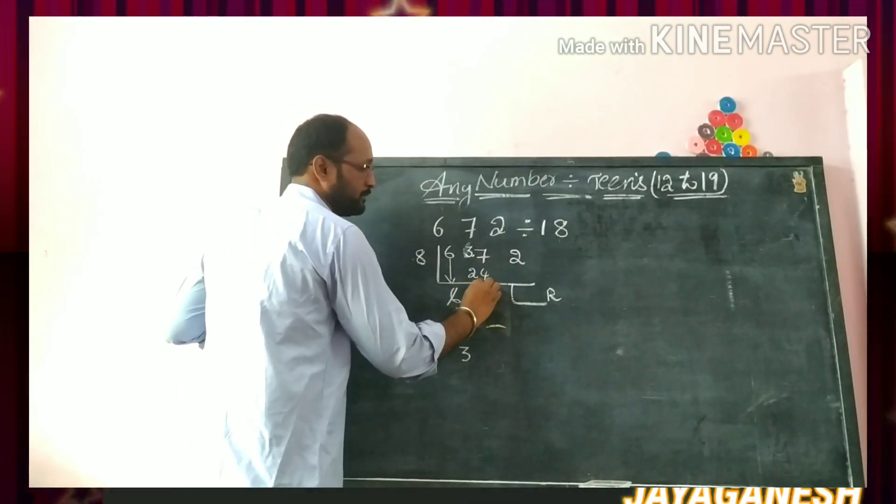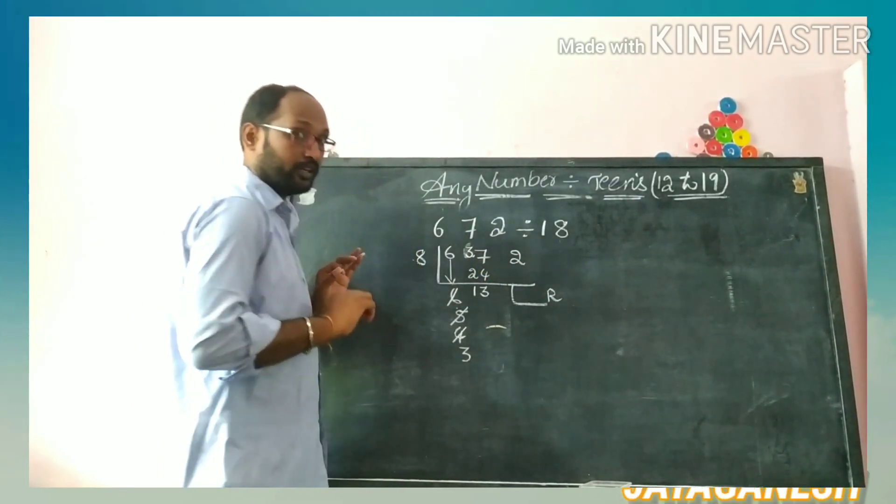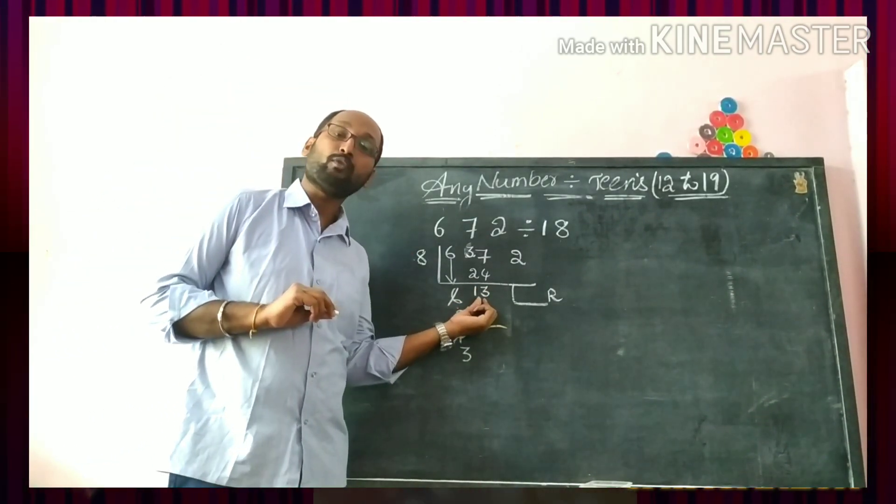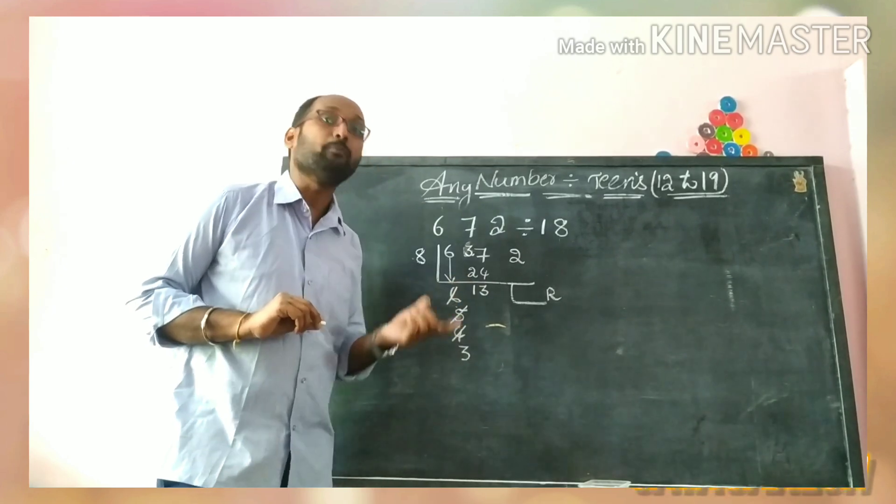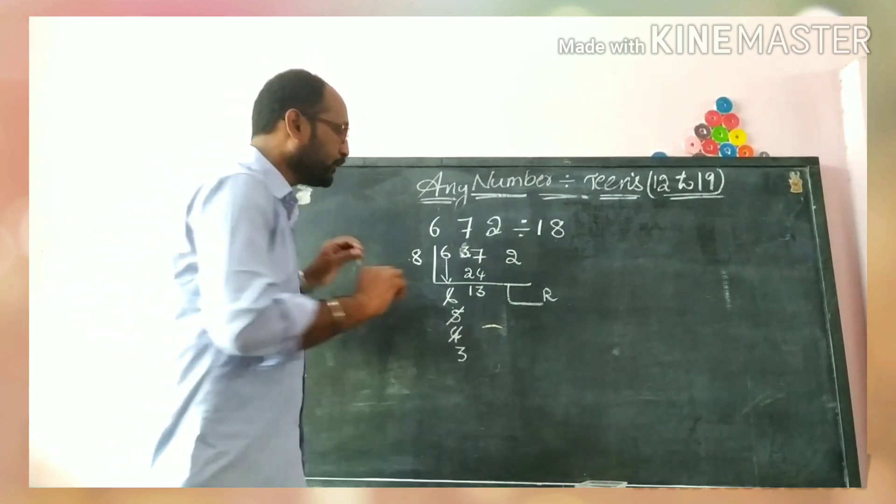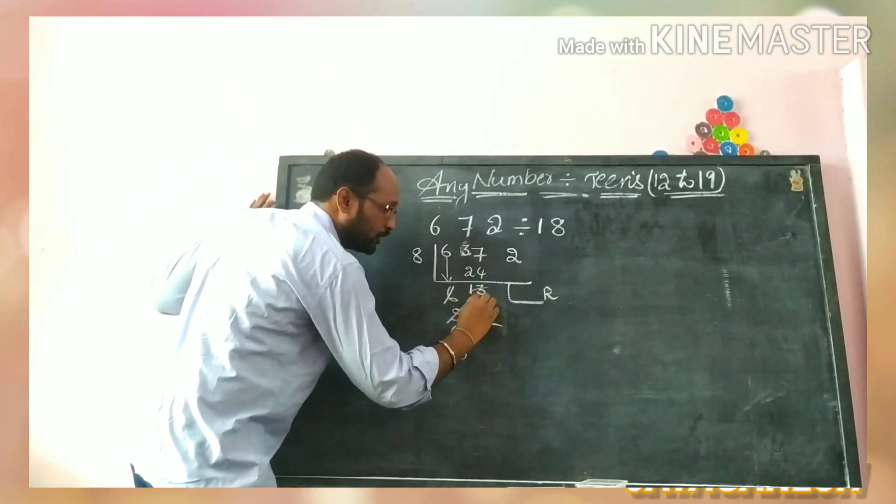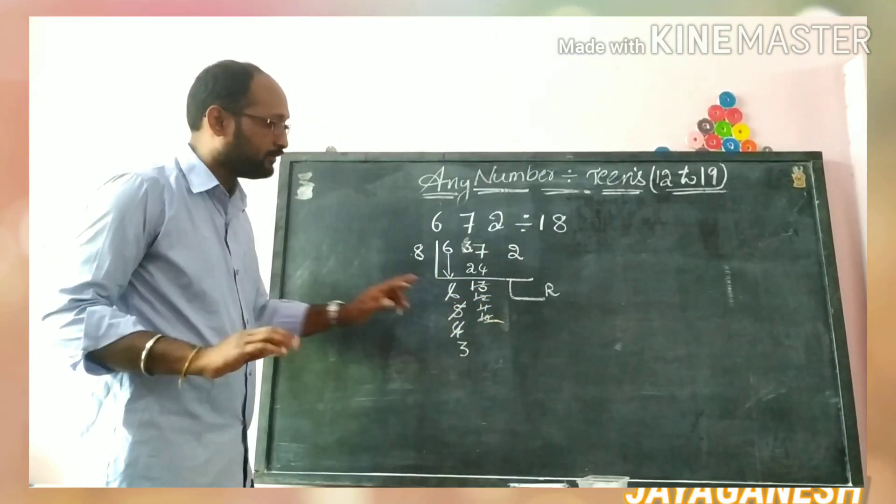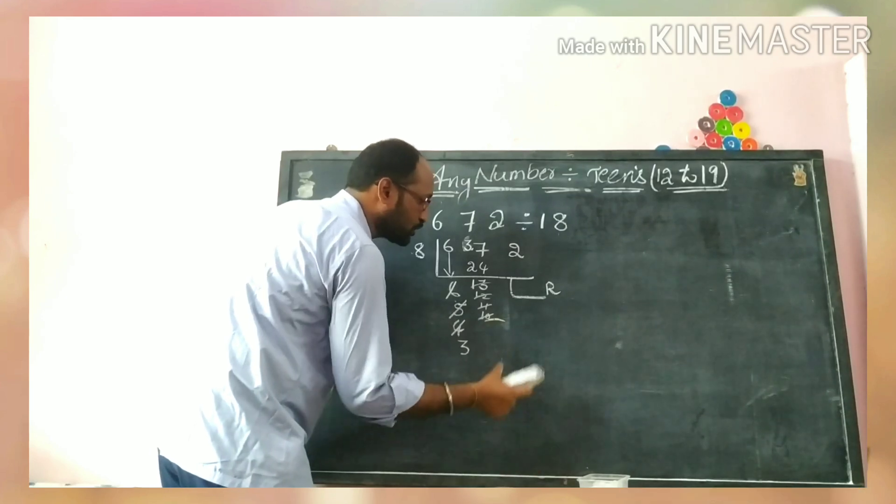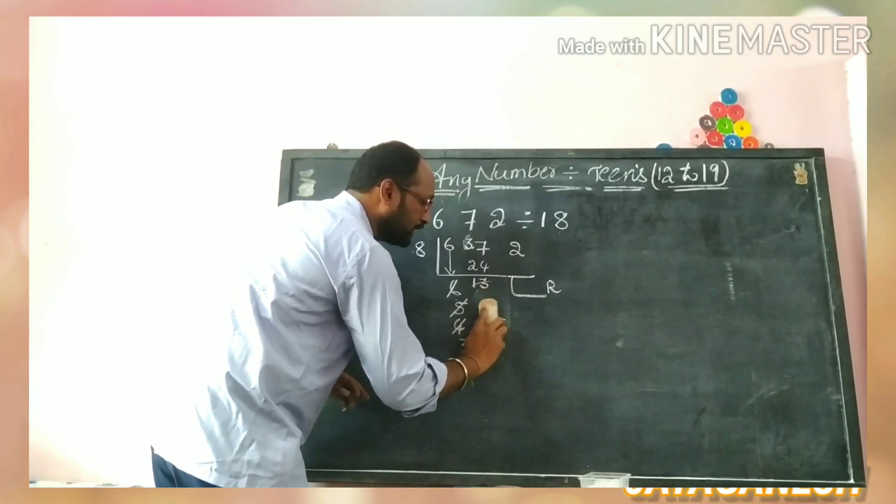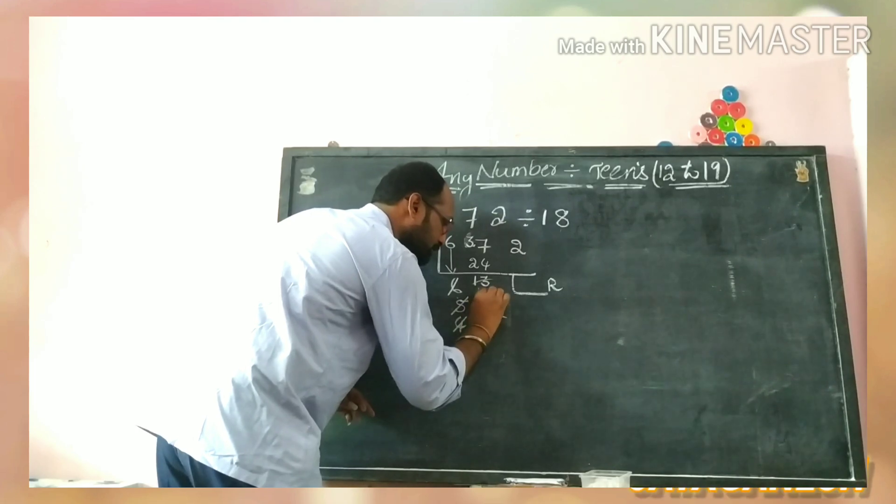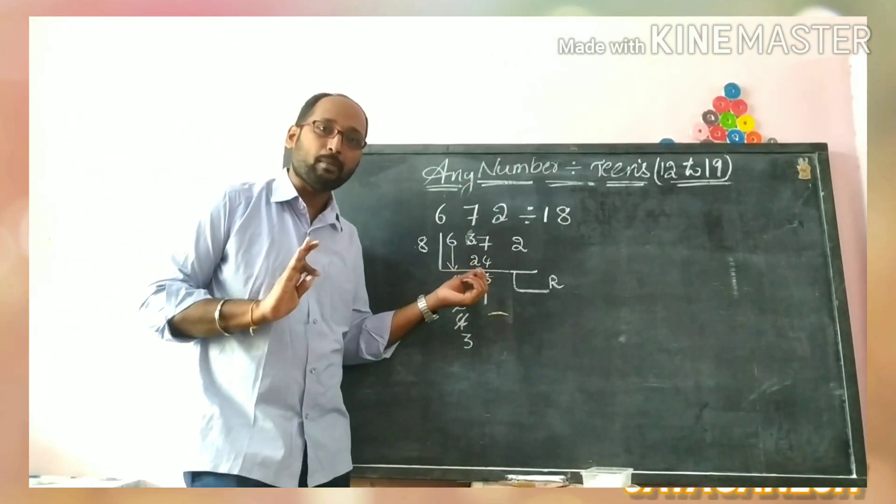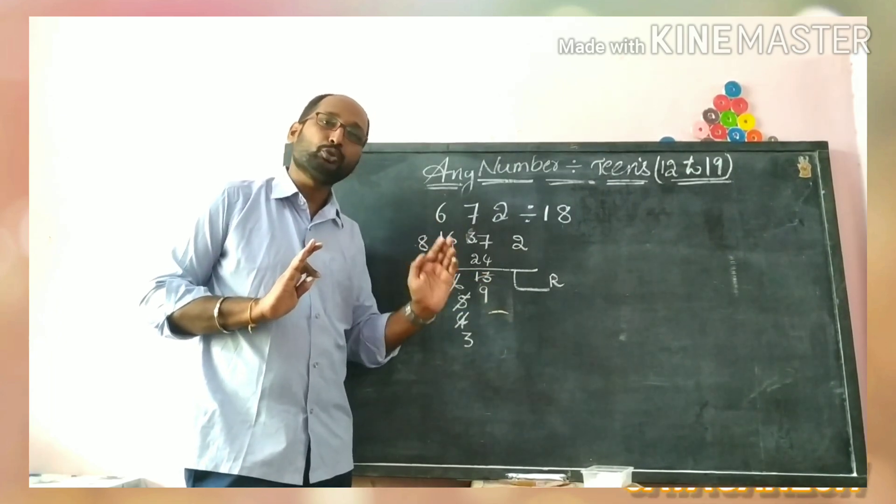In the previous example I said, in any place where if you're getting a double digit number, directly come to the single digit. No need to do 13, 12 is not possible, 11 is not possible, 10 is not. No need to write, it's a time waste. Instead, come directly to the single digit, it is 100% okay. If any time you're getting a double digit number, come to the single digit directly.